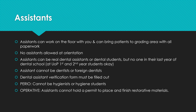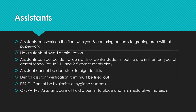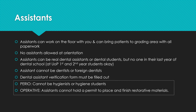Regarding assistance: you may have assistants during operative and perio. Assistants can be on the floor and bring patients to grading areas if paperwork is completed, but they cannot attend orientation. Assistants must be a real dental assistant or a dental student, but not a dental student in their last year — so only first and second years at our school. An assistant cannot be a dentist or foreign-trained dentist. There's a dental assistant verification form on page 24 of the candidate guide. For perio, your assistant cannot be a hygienist or hygiene student. For operative, your assistant must not have permits to place or finish restorative materials — no extended function dental assistants.